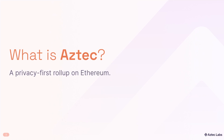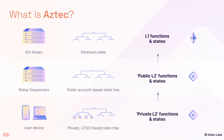So what is Aztec? Aztec is a privacy-first rollup on Ethereum. As a rollup, we have a bunch of state that is committed to on Ethereum. Being privacy-first, we have a number of different state trees that get committed to. We have a private UTXO-based state tree, which actually involves two trees, and we have a public account-based state tree like many other rollups. Private state is not just one tree, it's two.